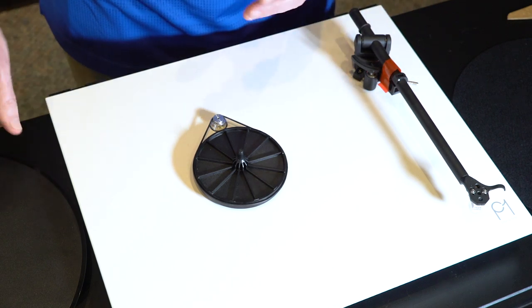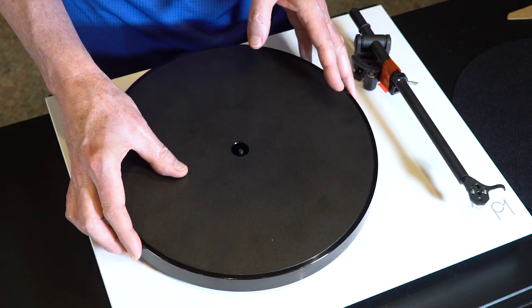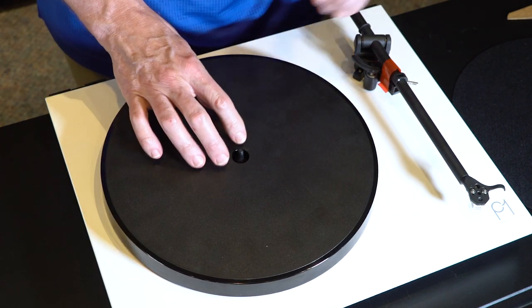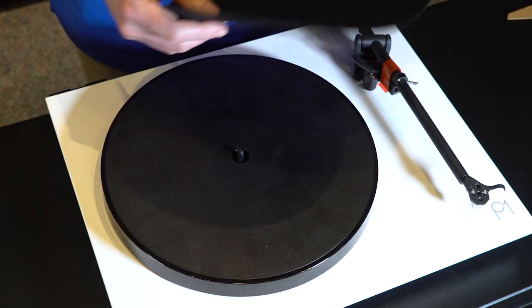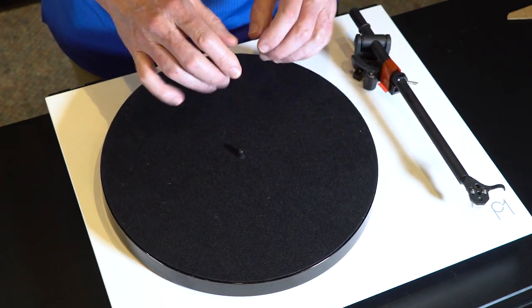The next step after the belt is in the right spot is to just take the platter and gently center it up on the table. It will kind of self-align itself. Then grab your mat and center that up on the table. And we're good to go there.